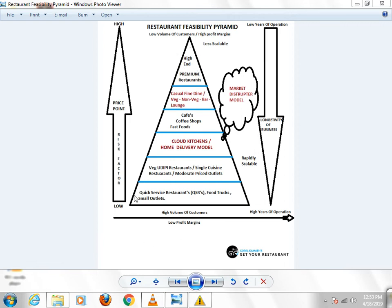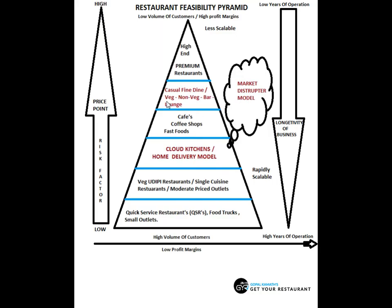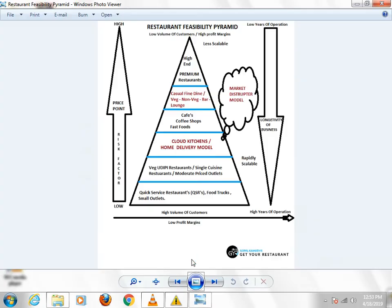So you have to choose this whole model. Whether you go to a QSR restaurant, a vegetarian restaurant, a cloud kitchen or delivery model, a coffee shop or fast food restaurant, a casual restaurant, or a high-end restaurant — you can download this whole restaurant feasibility pyramid for free. I have a link in the description section. You can download this whole model.